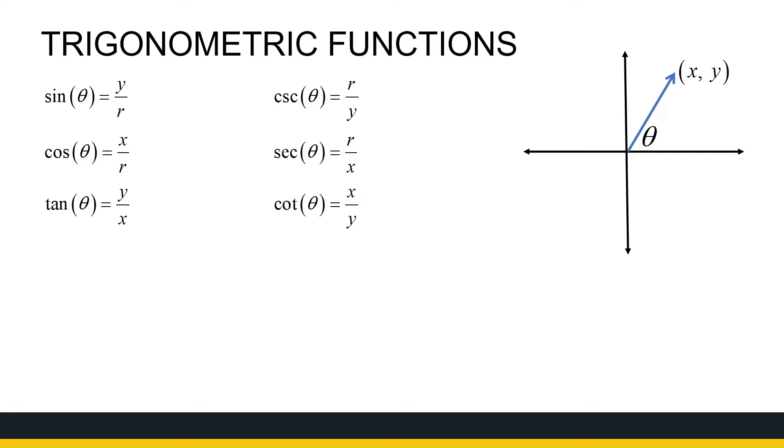Our six functions are sine, cosine, and tan, which you should be familiar with, but if we look at them on the Cartesian plane in radian measure, if I've got an angle theta and a point xy, sine of theta is y over r, cos of theta is x over r, and tan of theta is y over x.